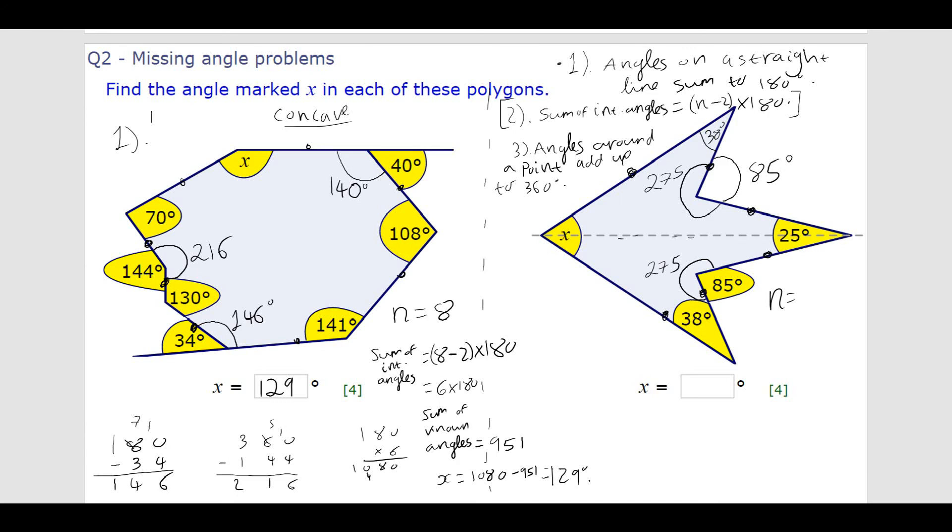So, it's got 6 sides, that means n is 6. So, to find the sum of the interior angles, I simply do 6 minus 2 times 180, which is just 4 times 180, which is 40 and 32. That's going to be 720, because, you know, it's a hexagon. This is actually a really irregular hexagon. And we know the sum of the interior angles in the hexagon is 720. So, that's going to be 4 times 180, 720.